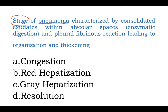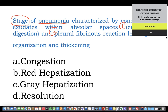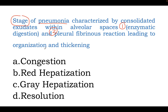Please remember that there are several features here of a specific stage, which is being characterized. Number one is enzymatic digestion. Number two is pleural fibrinous reaction. And we have organization and thickening. So, what stage of pneumonia is this? Is this congestion? Is this red hepatization? Is this gray hepatization? Or is this resolution?